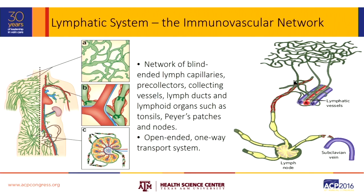The lymphatic system — we've been calling it the immunovascular network to differentiate it from the blood vascular network, because it has specific tasks and may be purposely designed to accomplish them. It's a network of blinded lymphatic capillaries, pre-collectors, lymph ducts, and lymphoid organs such as tonsils, Peyer's patches, and nodes. It's a one-way transport system that takes things from the interstitial spaces, collects them into the lymphatic capillaries, processes them through the pre-collectors, and then into the muscularized collectors.